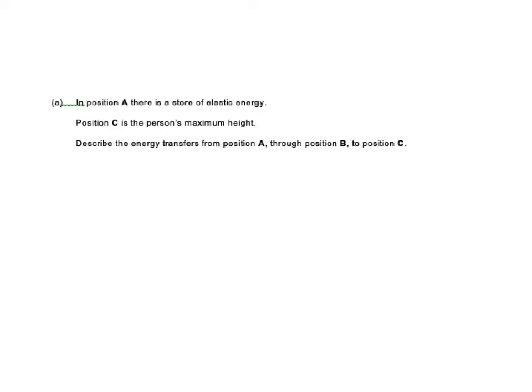And then it says in position A, there is a store of elastic energy. Position C is the person's maximum height. So you've got to describe the energy transfer from position A through to B, and then finally to C. So this is where, you know, looking at that picture in a lot of detail helps me to really start to think about what I'm talking about. So the first thing I do again, circle those command words. So I know that's good to describe, I don't need to explain, I just need to say what's happening. So my first bit, I'm looking at the first two points, between A and B, the elastic store decreases, because they've released the catapult. So remember when you put on an elastic band, you put lots of elastic energy into it. If you release it, it goes down. So that's my first part, and then I said then the kinetic and gravitational stores increase, because he moves, or she moves, and they're getting higher, so they're getting more gravitational energy.